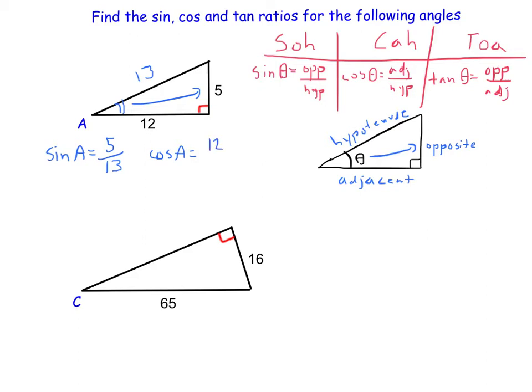So the adjacent is 12 over the hypotenuse of 13. And then the tangent: SOHCAHTOA, TOA is opposite, which is that 5, what it opened up to, over the adjacent 12.